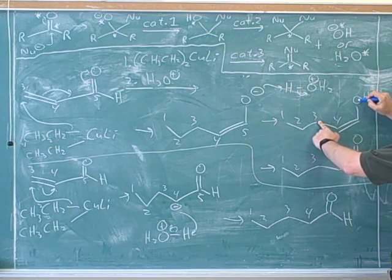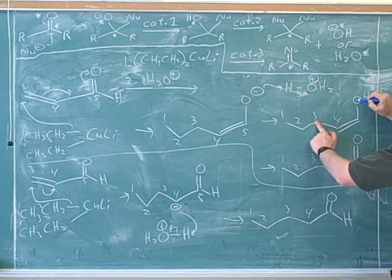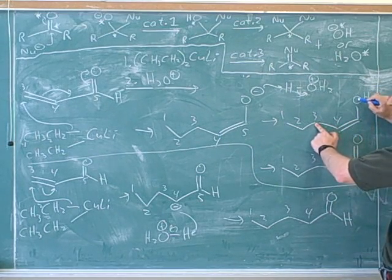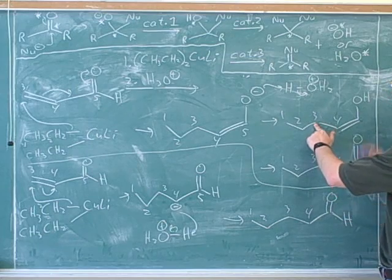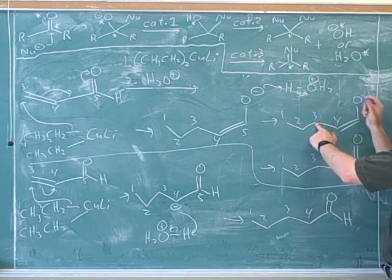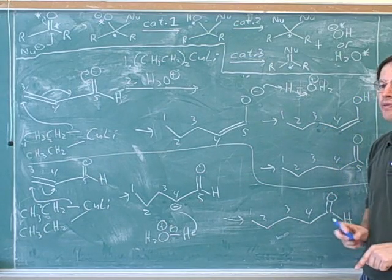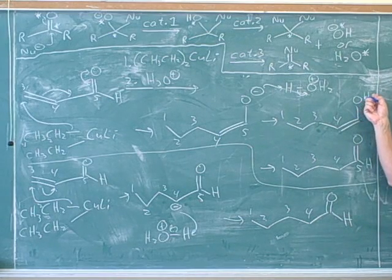Again, the 1 and the 4 are not IUPAC numbers. It just indicates that you can count 1, 2, 3, and 4 over here. So it's called 1,4 addition to indicate that this carbon got attacked and this oxygen got protonated. But like I said, that's actually not a very useful way to think about it because this oxygen is not going to stay protonated.